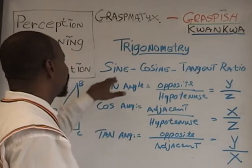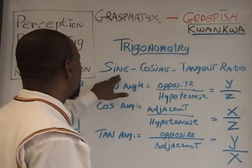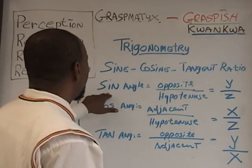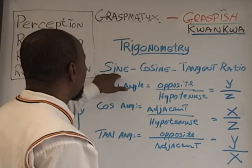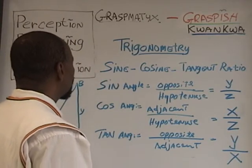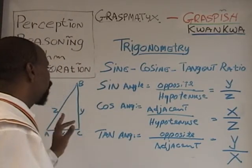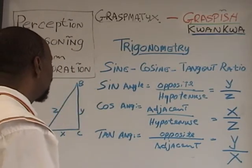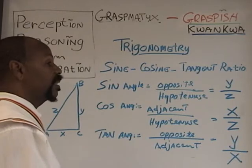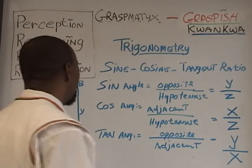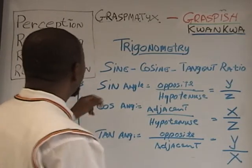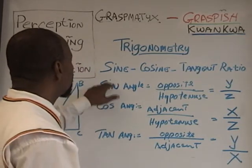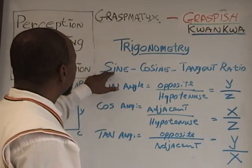S-I-N is short for sine. So you see, I write it S-I-N and refer to it as sine. Don't get caught up in the biblical term of sin — that's how they spell sin in the Bible too — but in math this means sine.